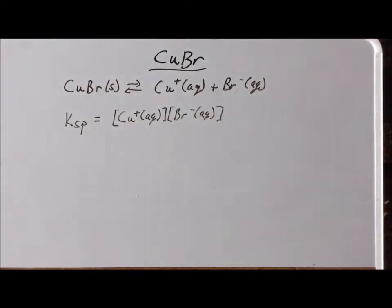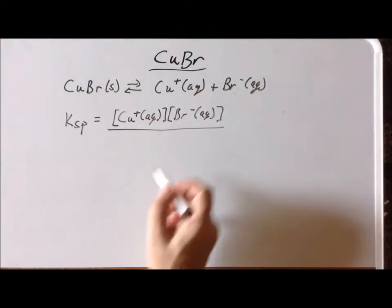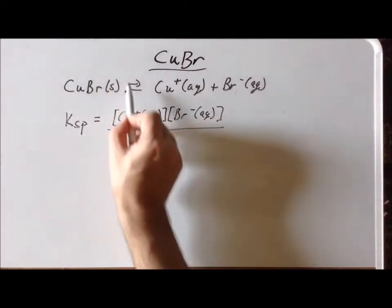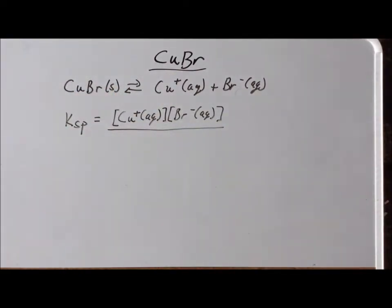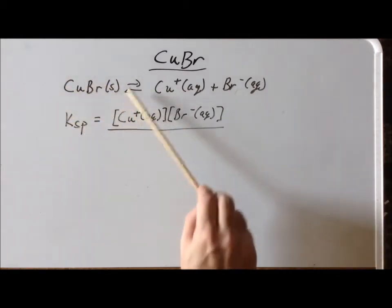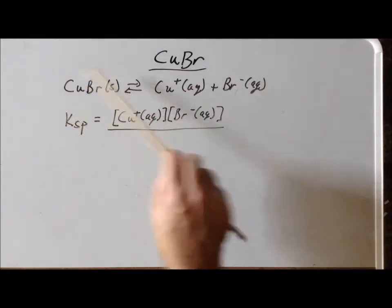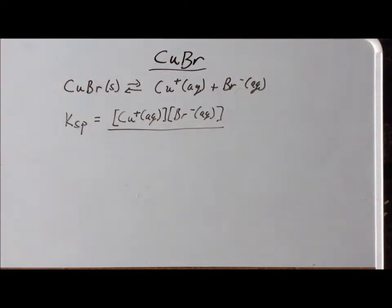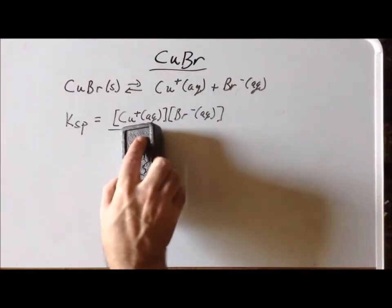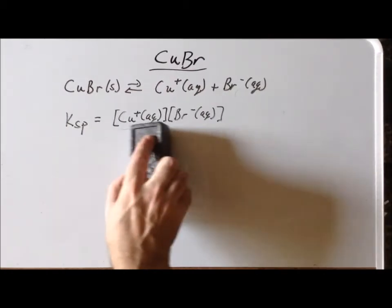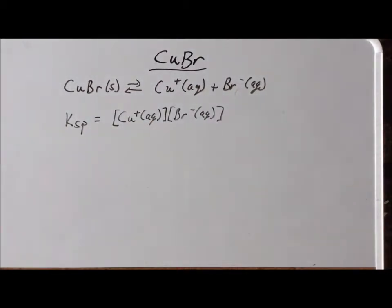Now, naively, what we might do is think we're going to put the reactant in the denominator. But we recall that there are certain exceptions to that rule. One of the most important exceptions is the case where we have a pure solid or liquid compound. Because the concentration of a solid never changes, and the concentration of a pure liquid never changes, there's no point in including them in the equilibrium constant. So there is no denominator — we just have the product ions written on the right-hand side.